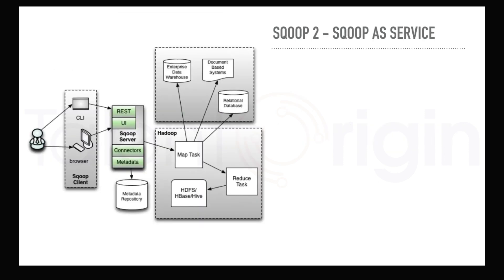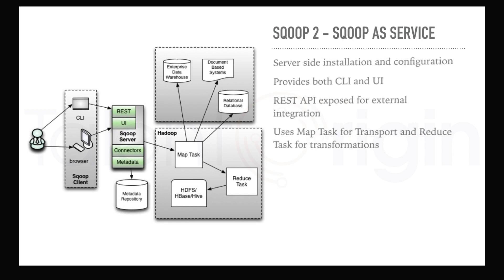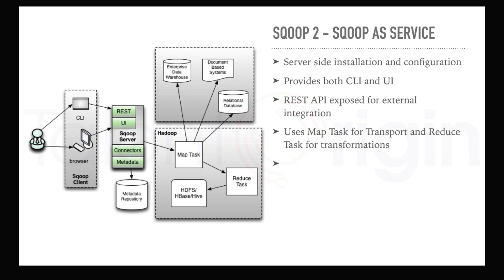Coming to Sqoop 2 — Sqoop 2 can also be called Sqoop as a Service. The main goal of Sqoop 2 is to provide Sqoop as a service, meaning installation and configuration are maintained on the server side. A major improvement in Sqoop 2 is that it provides both a web UI and a CLI, as well as a REST API for external integration. In the Sqoop 2 architecture, there are two tasks: a mapper task that handles transportation of data from the source RDBMS, and a reducer task that handles transformations and finally stores the data into HDFS or Hadoop.